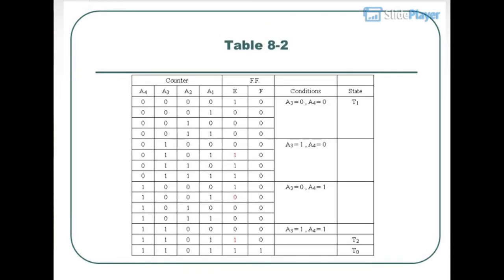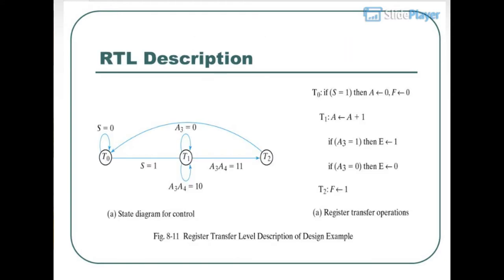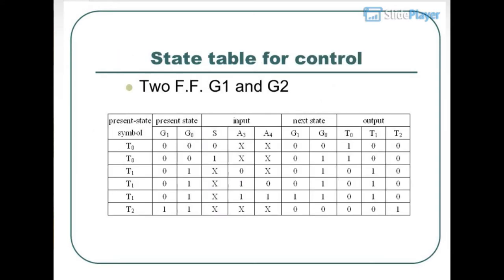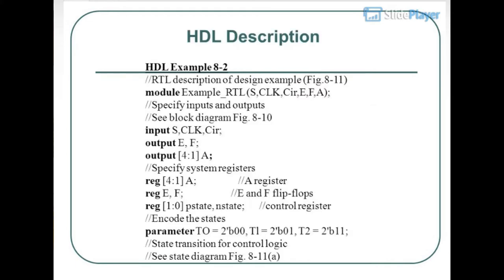Table 8-2 shows the data path for the design example. The RTL description and state table for the control logic uses 2 flip-flops G1 and G2. A logic diagram of the control is provided. HDL Description Example 8-2 follows.